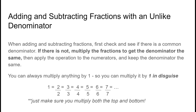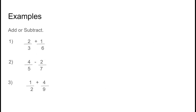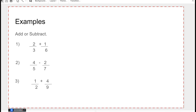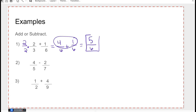Let's give this a try. In the first example, the denominators are three and six — not the same. I want to make the three into a six by multiplying by two over two. So two times two is four on top, and two times three is six on the bottom, plus one over six. Now I have a common denominator, so I do the operation on top to get five over six. Five and six have no common factors, so that is the final answer.